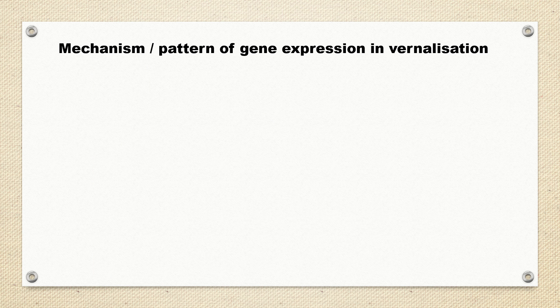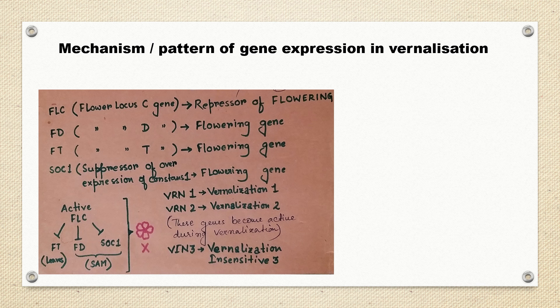Finally, we will come to the mechanism or pattern of gene expression in vernalization. Here we see the role of three major genes: FLC or Flowering Locus C gene, FT or Flowering Locus T gene, and FD or Flowering Locus D gene.